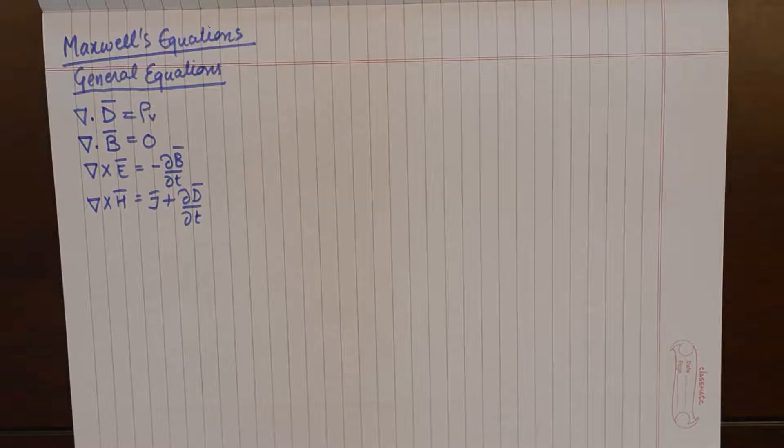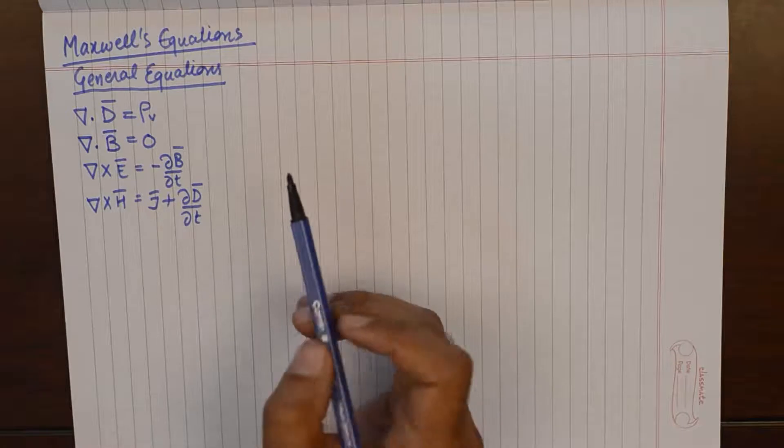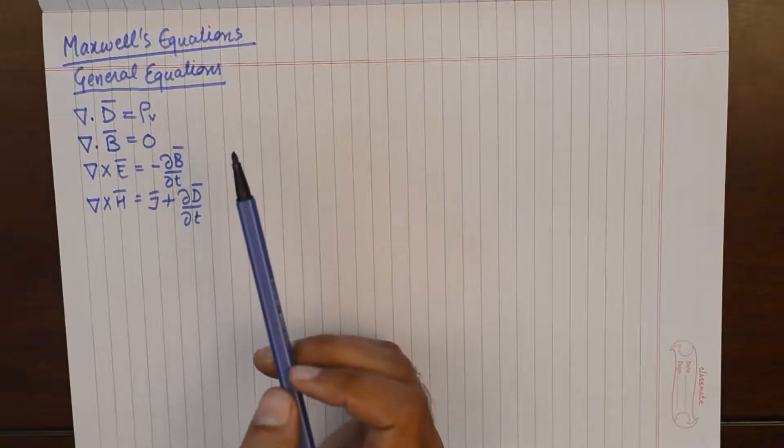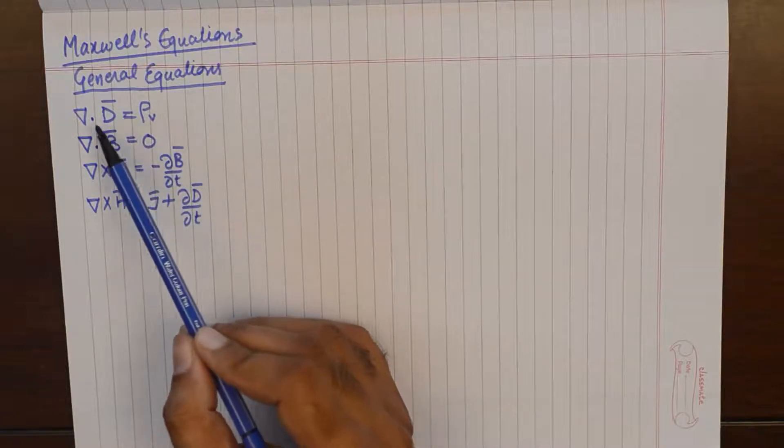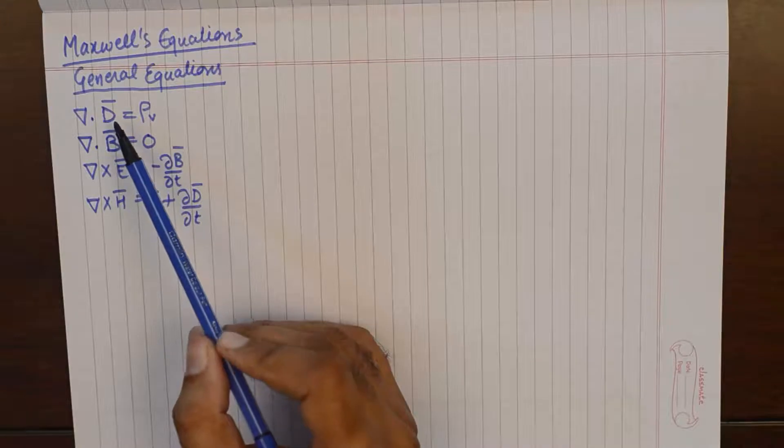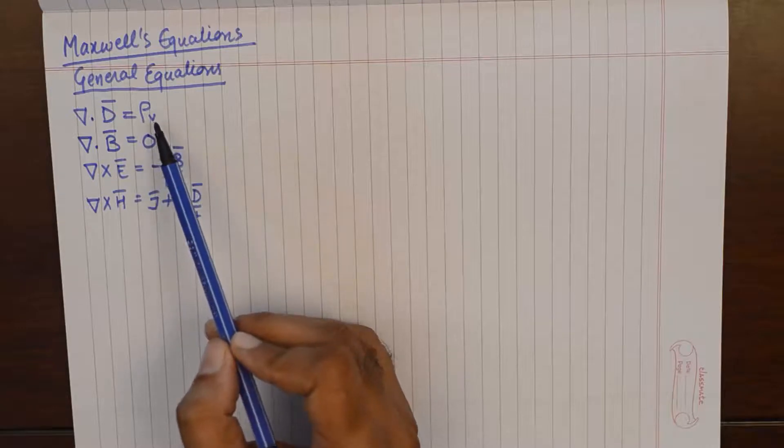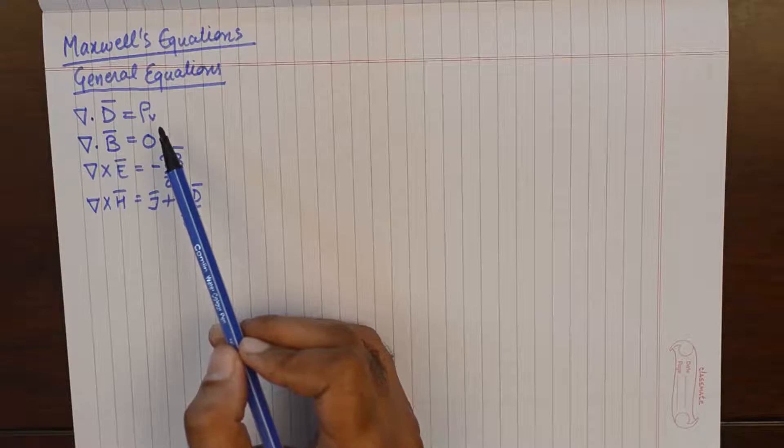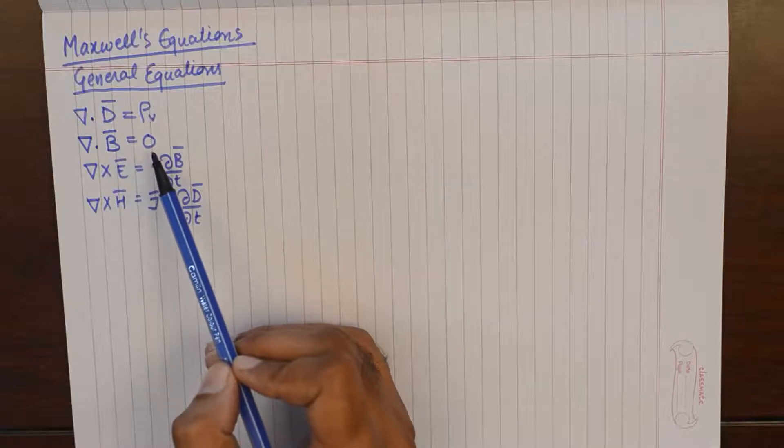The generalized form of Maxwell equations are written on the notebook and just to recapitulate a bit, I would like to mention what all vectors are mentioned here. Divergence of electric flux density D is equivalent to volume charge density, and divergence of magnetic flux density is zero.